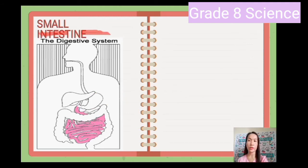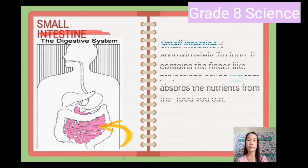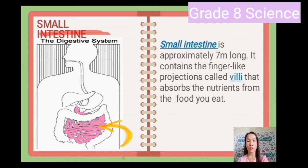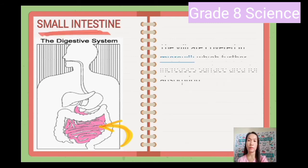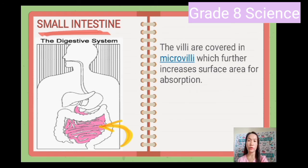Then we have the small intestine. The small intestine is approximately 7 meters long. It contains finger-like projections called villi that absorb the nutrients from the food you eat. The villi are covered in microvilli, which further increases surface area for absorption.